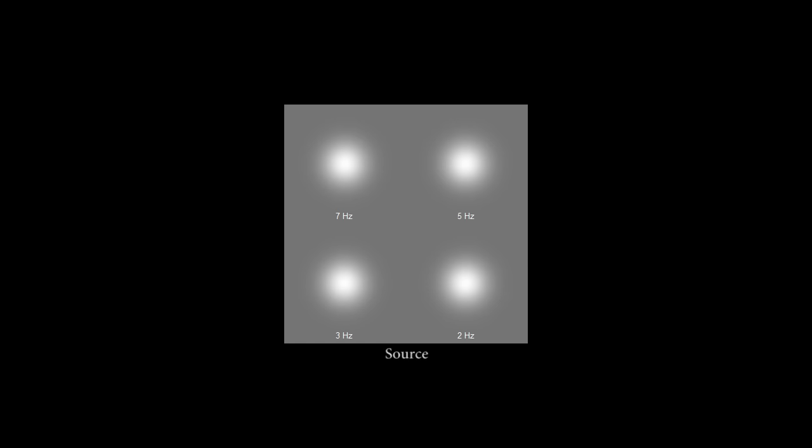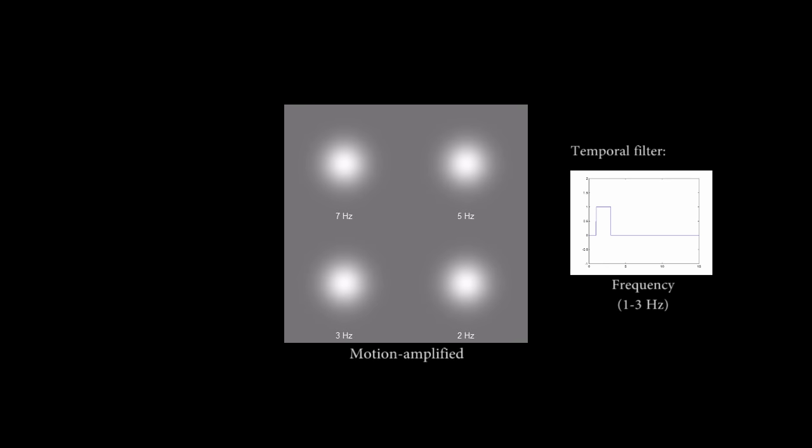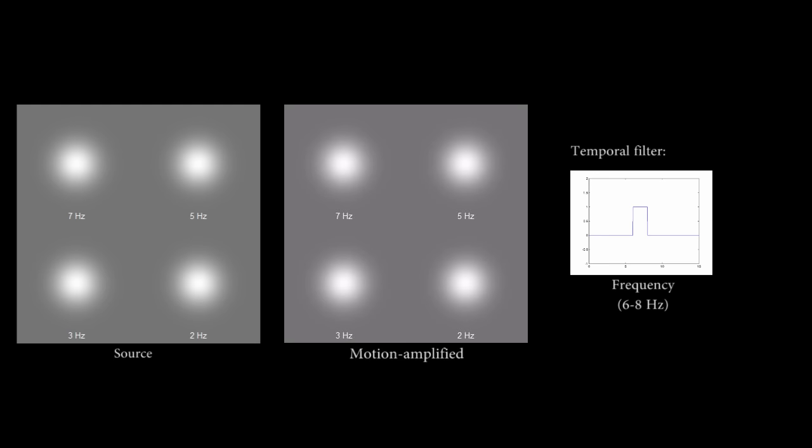Here, several blobs oscillate at different temporal frequencies, as shown. By tuning the temporal frequency passband, we can selectively control the temporal frequencies that are amplified. Notice that the same temporal filter is applied to all pixels, and while the spatial motion is amplified, the temporal frequency is maintained.